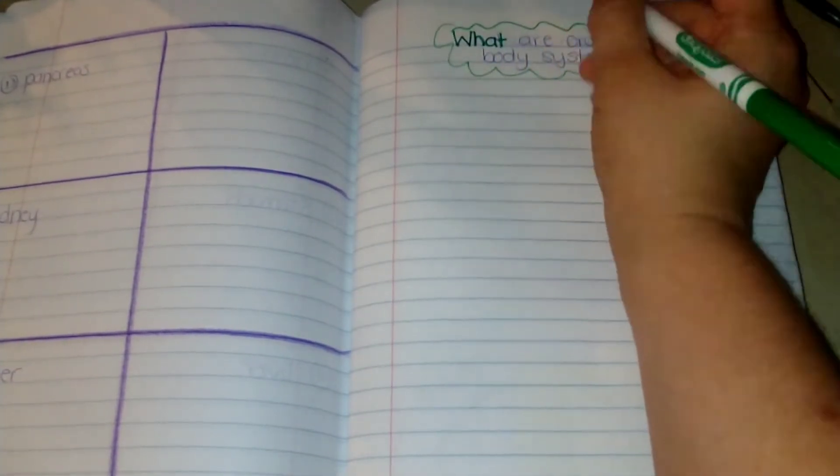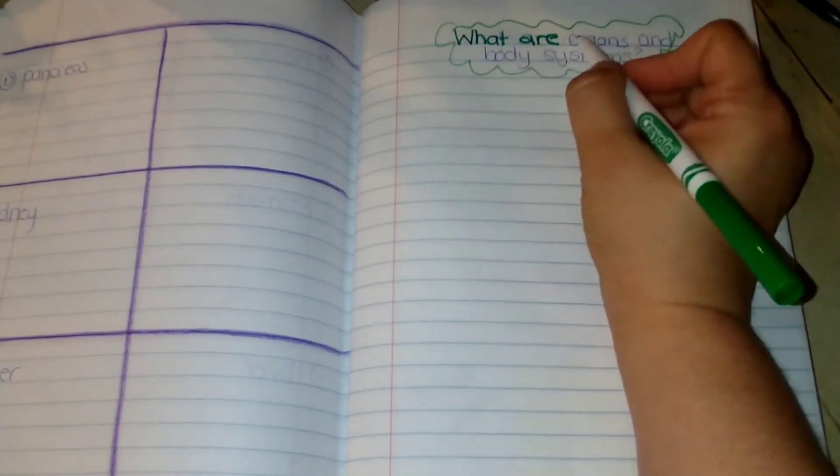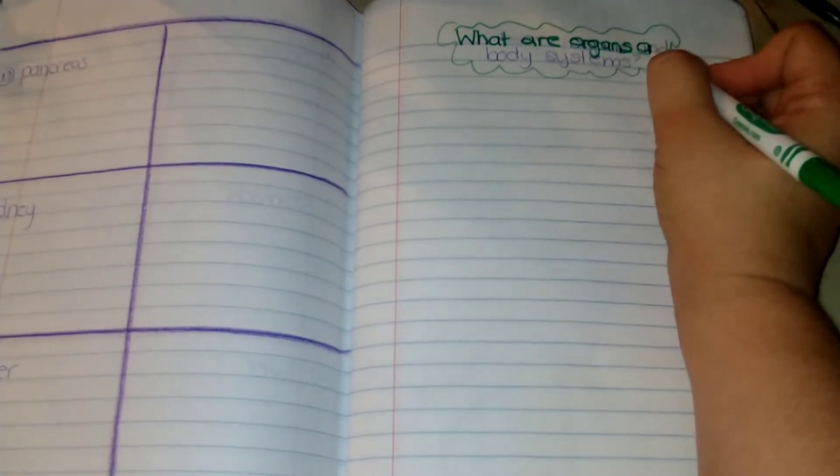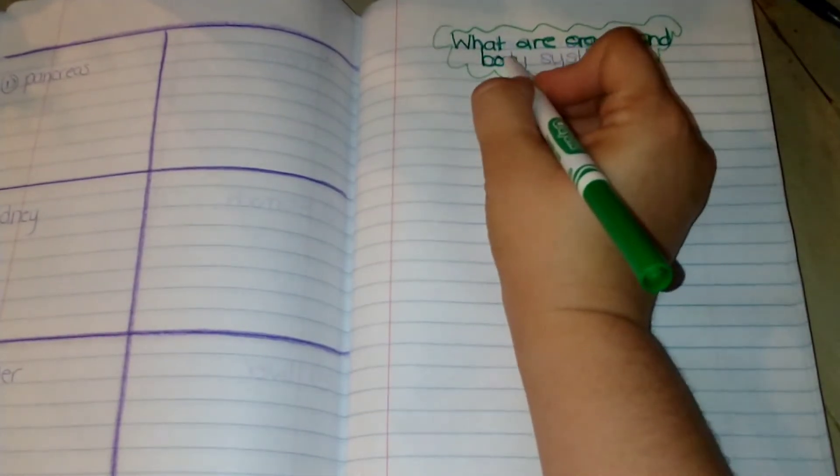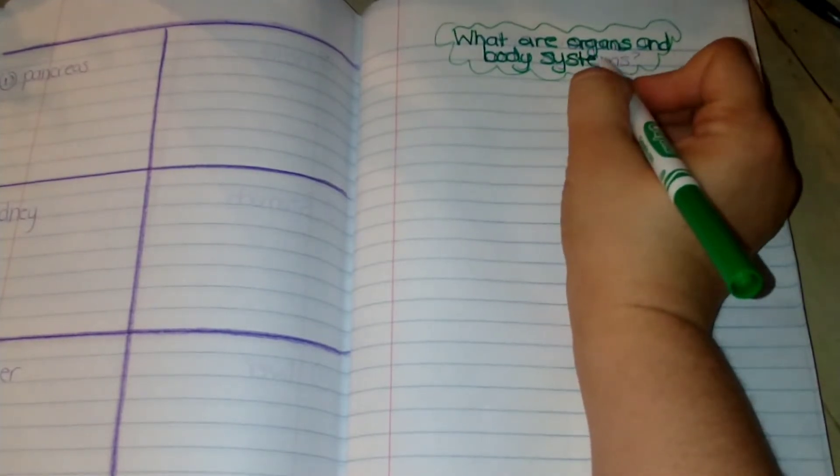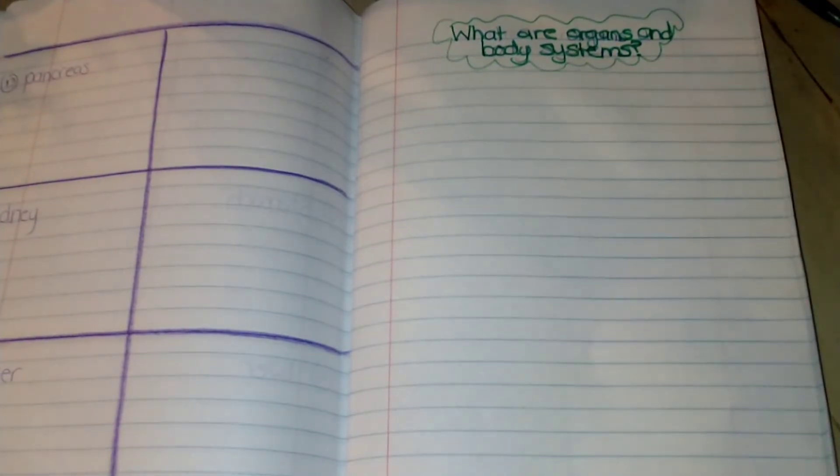So for this lesson, you do not need to glue anything in, but the title is What are organs and body systems? And what you would do is write it on the page next to your last page of the vocabulary words, so we're not wasting any pages. Gotta save those trees!